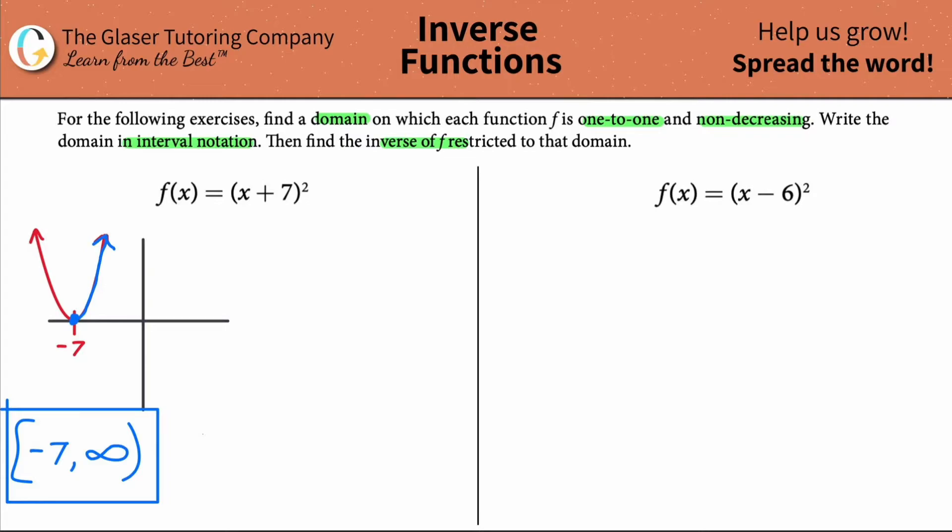Now it says then find the inverse of f restricted to that domain. So now what we have to do is we're going to find the inverse function of this. In order to do that, just simply make this a y. Then all you're going to do is everywhere you see a y, put an x. Everywhere you see an x, put a y. So this now new thing is going to look like x equals (y + 7)².